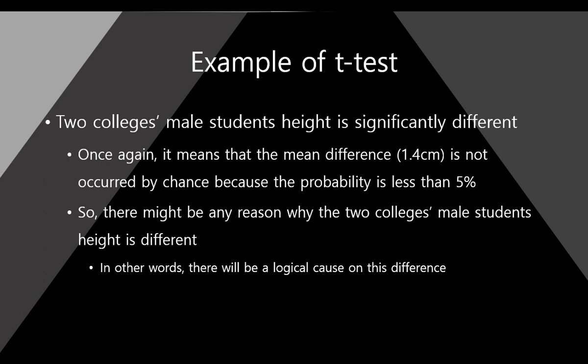When we say the result is significant, it means there is a significant reason — something causing this difference — but we don't know what it is yet. In other words, there will be a logical cause for this difference. Sometimes we interpret this result as a causal relationship, but here we don't know the cause. Anyway, the difference is not occurred by chance — maybe there is some reason for the difference.